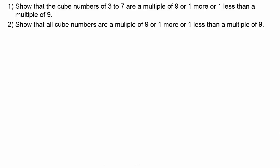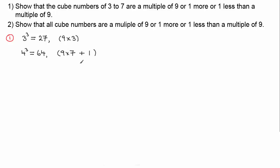Okay, welcome back. For the first one, this is done by proof by exhaustion, because we should be able to write down all the cube numbers from three — that's 3³, 4³, 5³, 6³, and 7³ — and check that they are a multiple of nine, or one more or one less than a multiple of nine. Starting with 3³, that turns out to be 27, and you can see it's a multiple of nine. Then 4³ is 64, which is a multiple of nine plus one more.